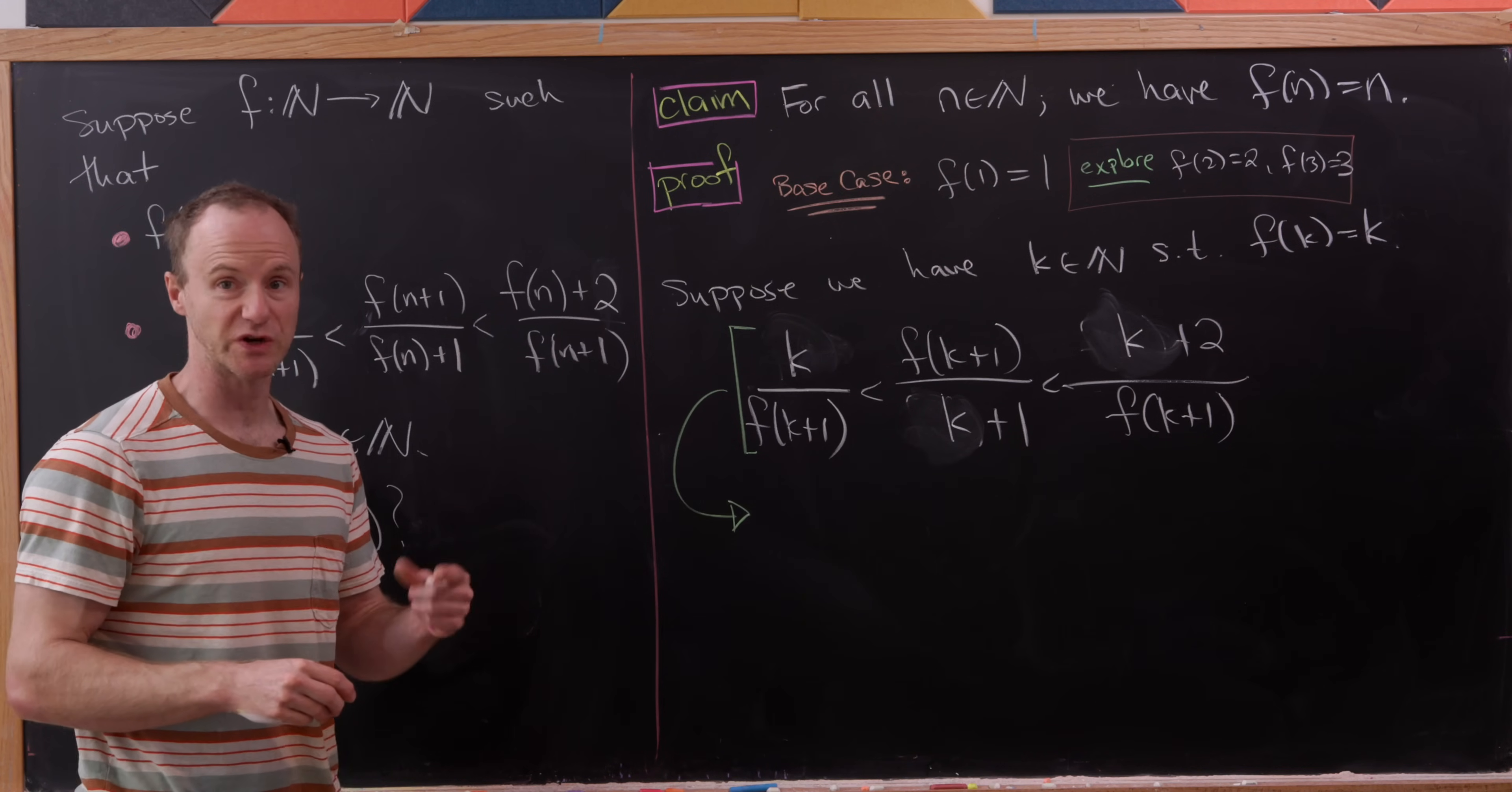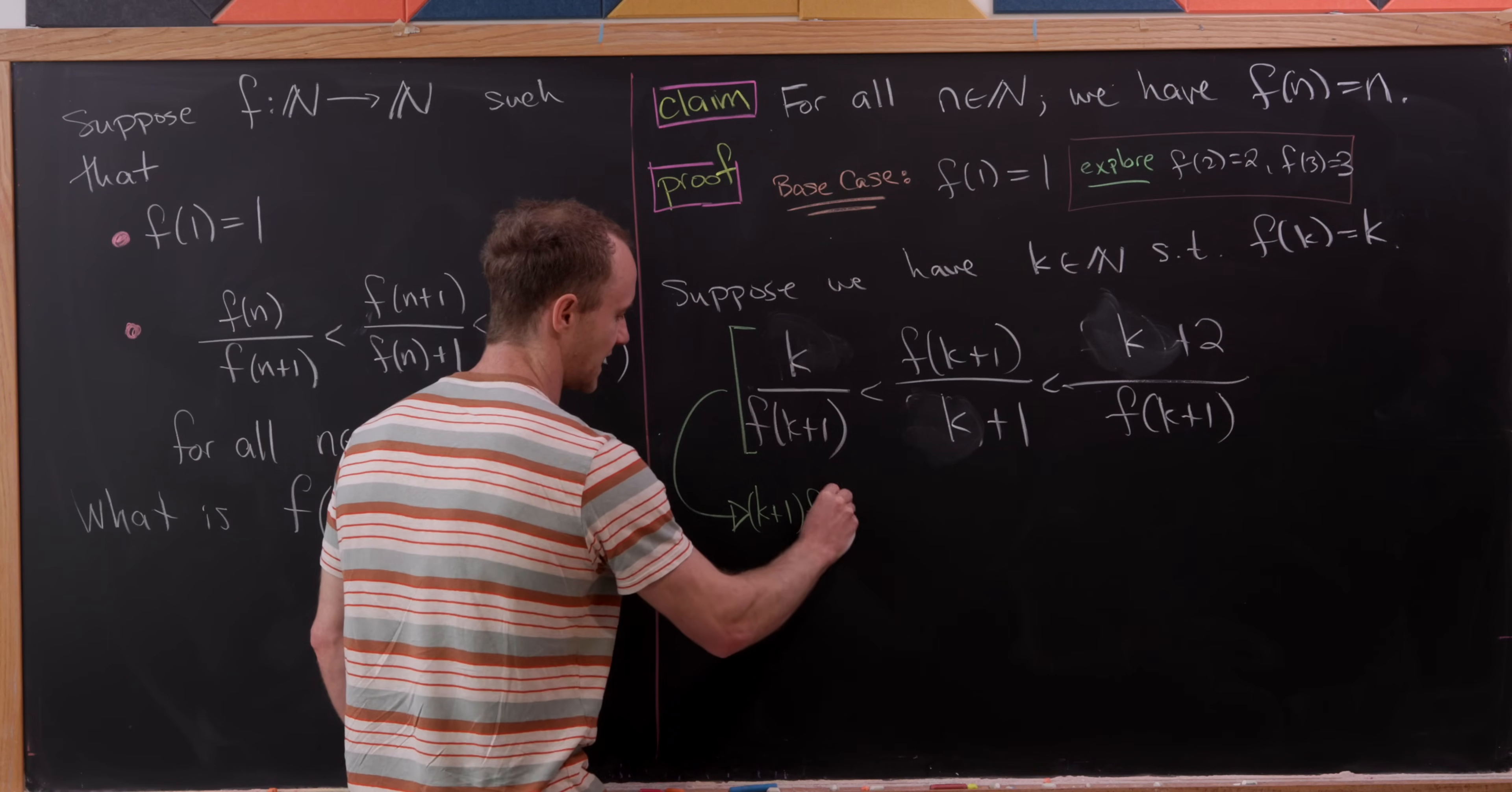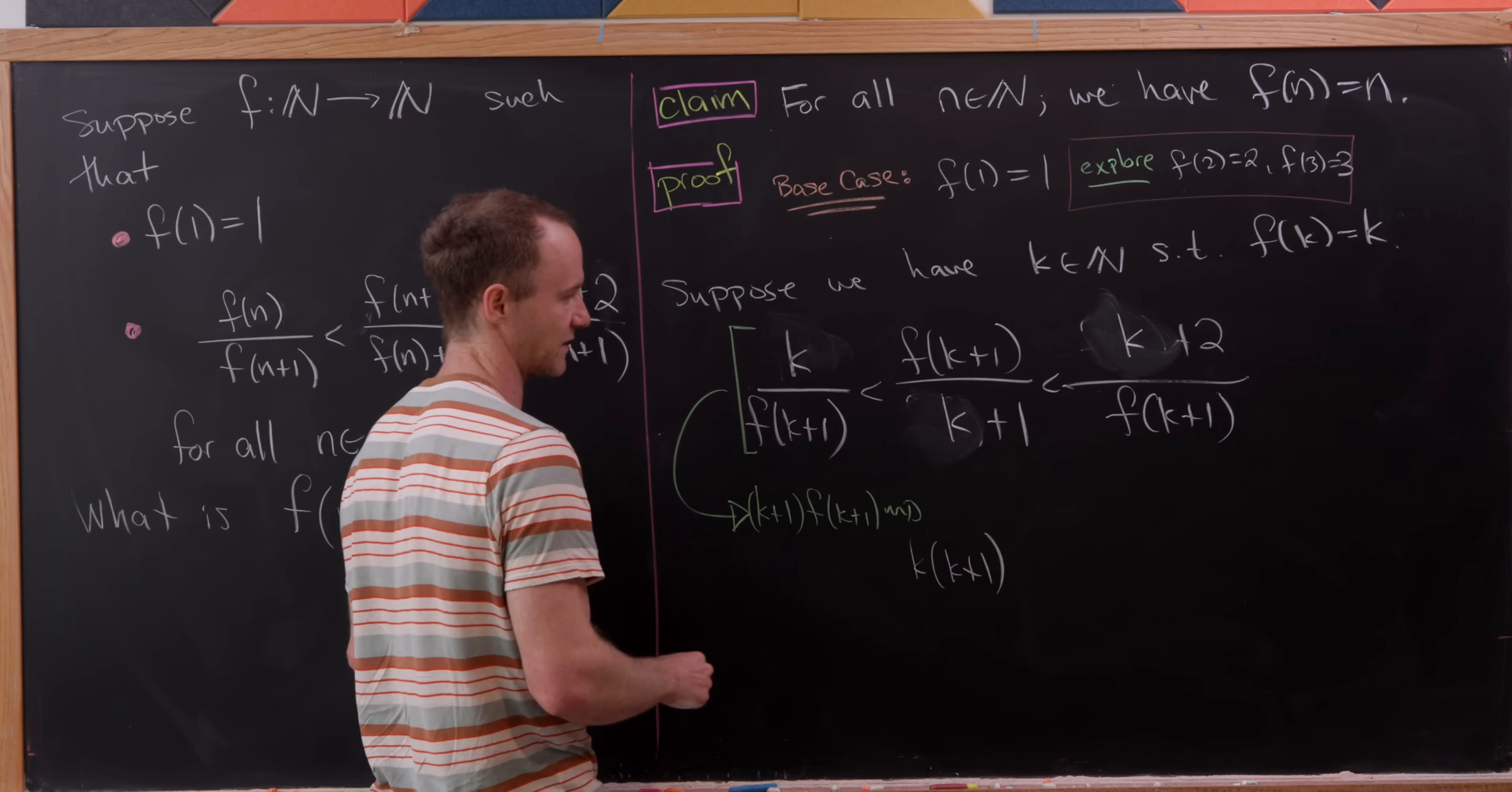But now we'll clear denominators, and it goes without saying that we can clear denominators without worry of switching the inequality because we are within positive integers here. So in this case we'll clear the denominators by multiplying by k plus one times f of k plus one, and that's going to give us something like this. We have k times k plus one on the extreme left hand part.